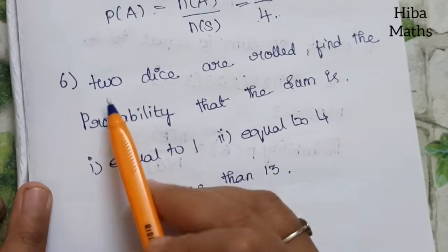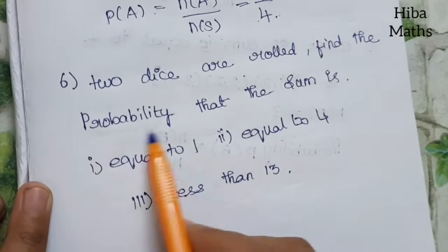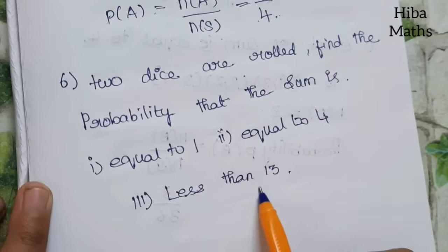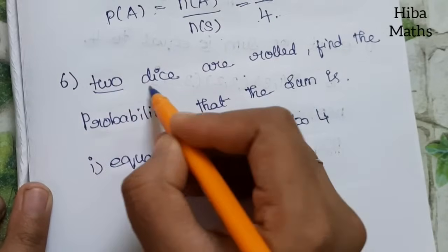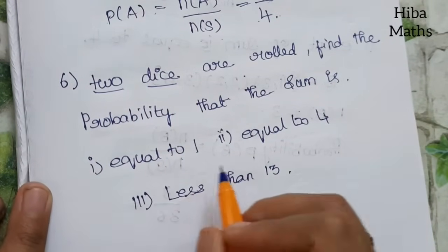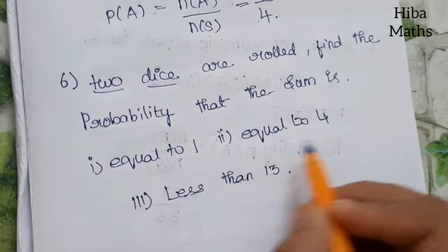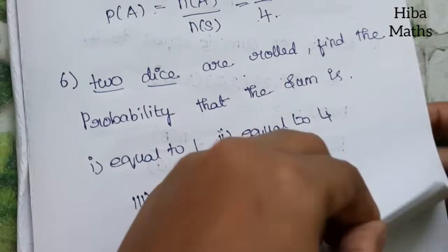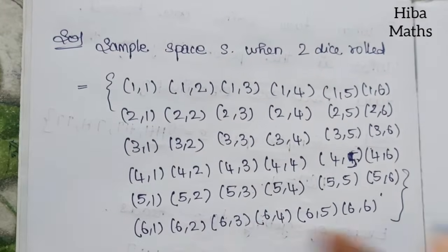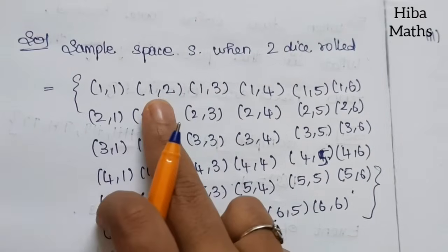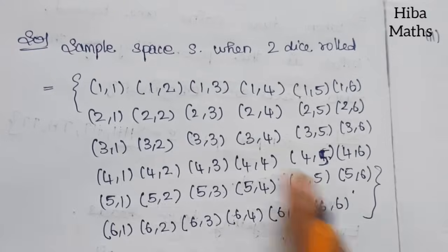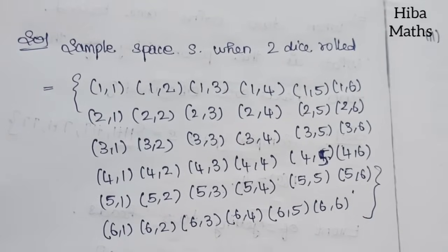Sixth question: two dice are rolled. Find the probability that the sum equals 1, equals 4, and is less than 13. When two dice are rolled, the sample space has 36 outcomes total.